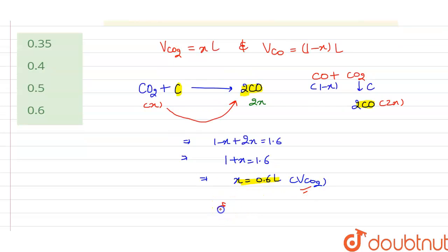And if you want to find out the volume of CO, so it will be 1 minus x, that is equal to 1 minus 0.6 liter, that is 0.4 liter. So 0.4 liter will be the volume of CO and 0.6 liter will be the volume of CO2. So this is the answer.